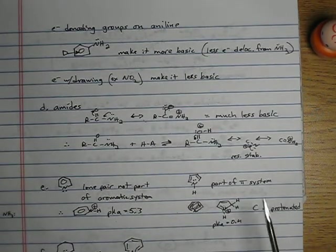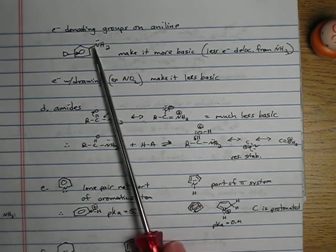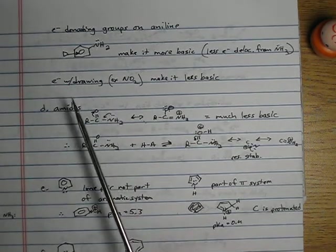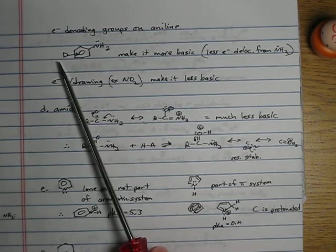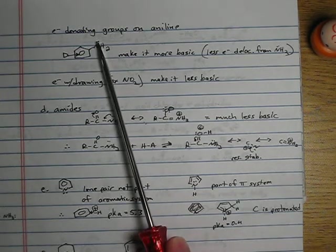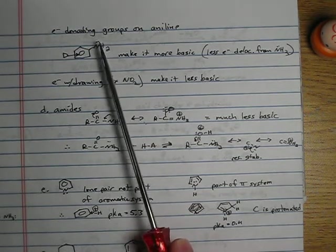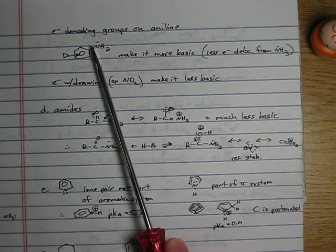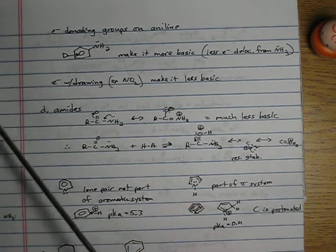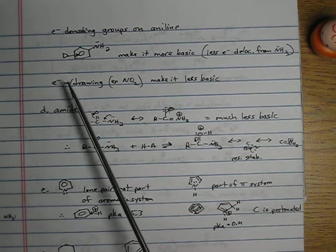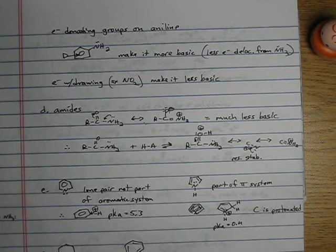So electron donating groups make an aniline more basic. Electron withdrawing groups pull electron density away from the ring. Therefore, the lone pair would have more electron density pulled away from it towards the benzene ring here. So electron withdrawing groups make it less basic.